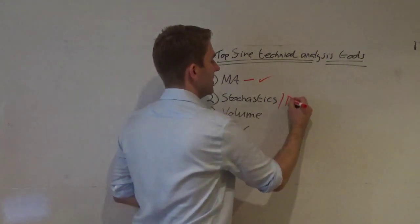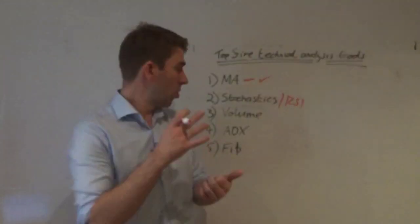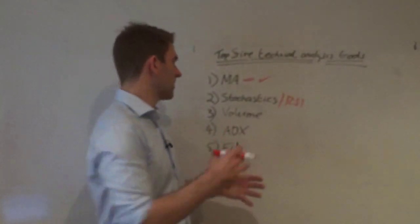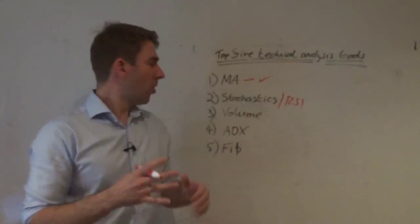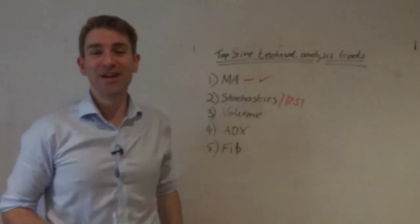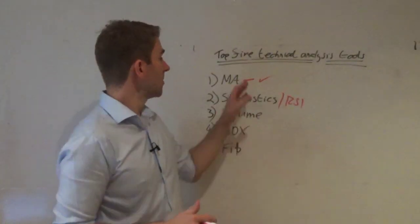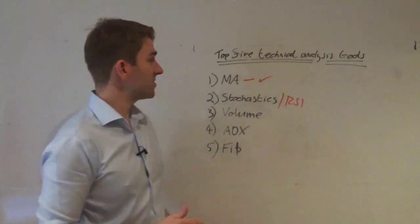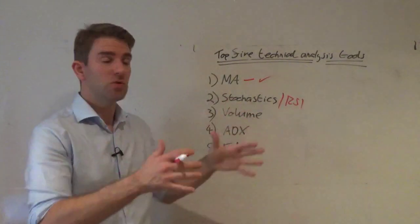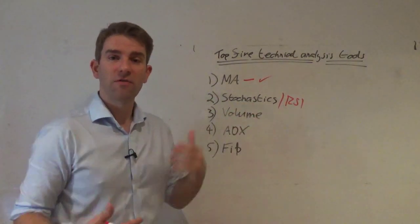Number two: stochastics — and you could also put RSI here. These are oscillators giving us either an overbought or oversold condition. I like stochastics because there's one specific setup I use: looking for the first oversold condition after a long period of overbought. You could equally use an RSI for the same purpose.